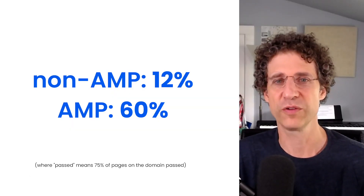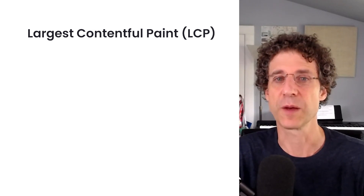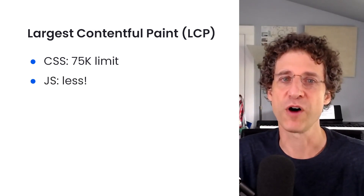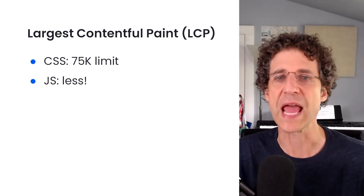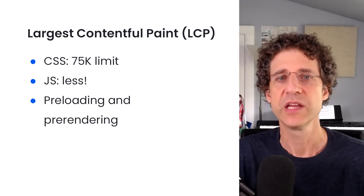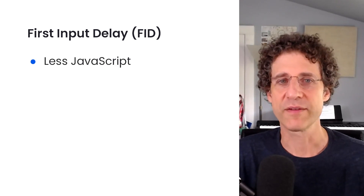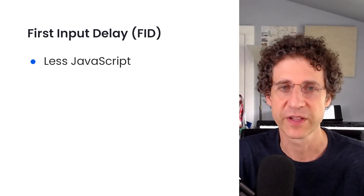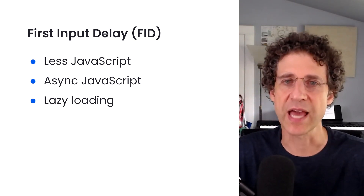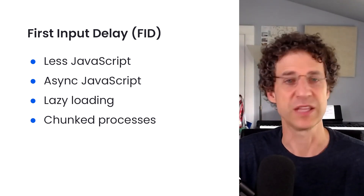Why does AMP fare so much better? For Largest Contentful Paint, valid AMP pages are built to have less JavaScript and less CSS, which helps content load quickly. AMP enforces a 75k CSS limit, and JavaScript is loaded asynchronously. AMP caches are quick and they preload and pre-render content when possible. For First Input Delay, less JavaScript means very little time between elements displaying and becoming interactive. AMP can lazy load elements below the fold so things you can't see yet won't delay things you can. AMP also implements process chunking, so long tasks get split up and don't lock up your page.